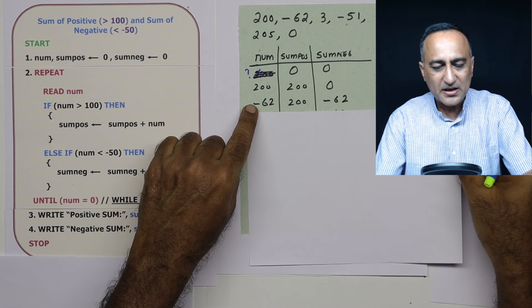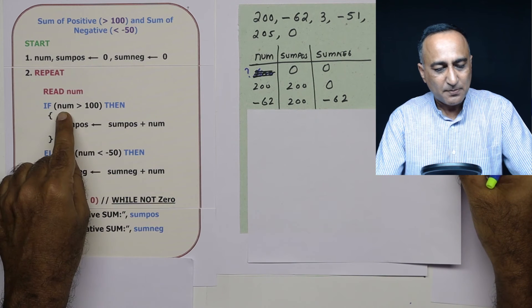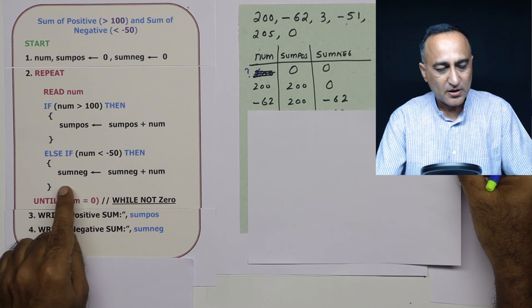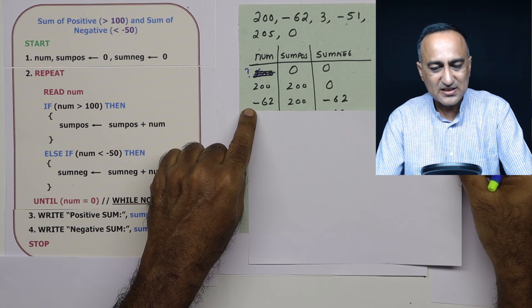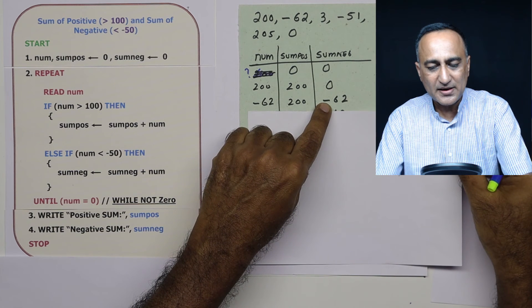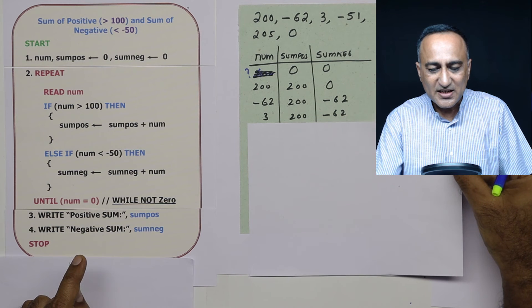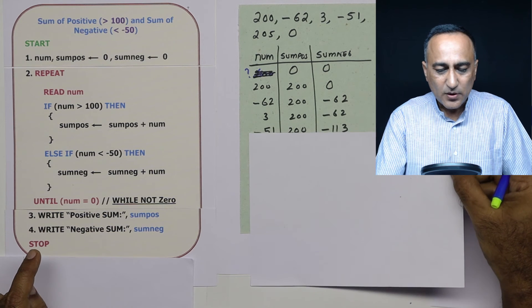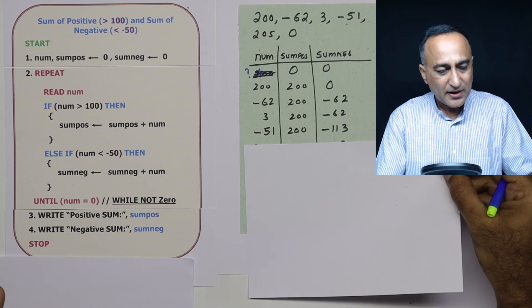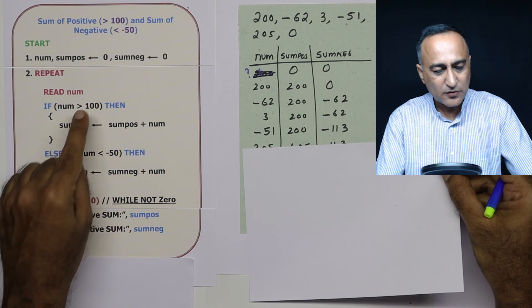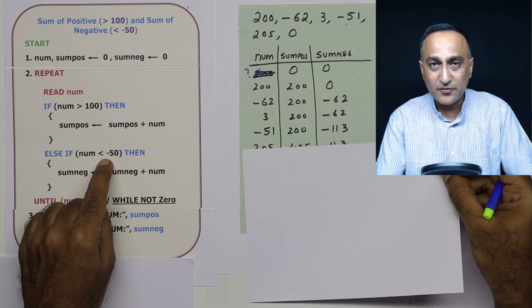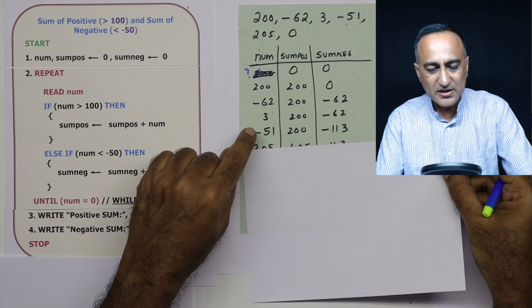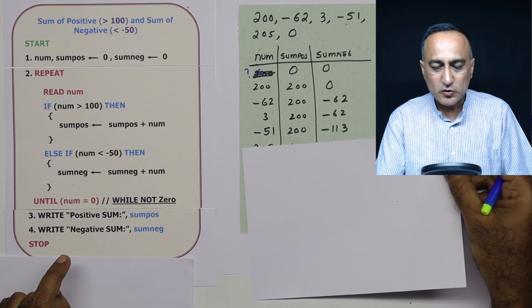Next, I read minus 62. Is minus 62 greater than 100? False. But is minus 62 less than minus 50? True. So sum negative becomes zero plus minus 62, giving sum negative equal to minus 62. Then I read 3 — nothing changes because both conditions are false. Then I read minus 51. Is minus 51 greater than 100? False. Is minus 51 less than minus 50? Yes, true. So sum negative becomes the old value minus 62 plus minus 51, which is minus 113.